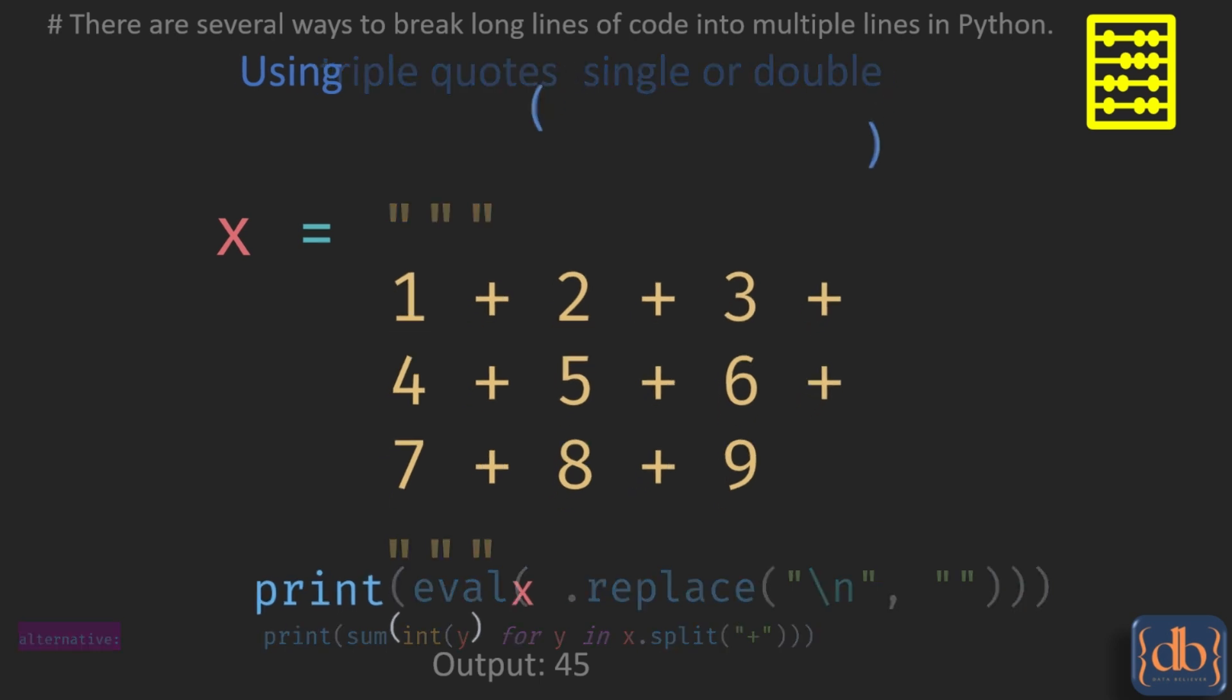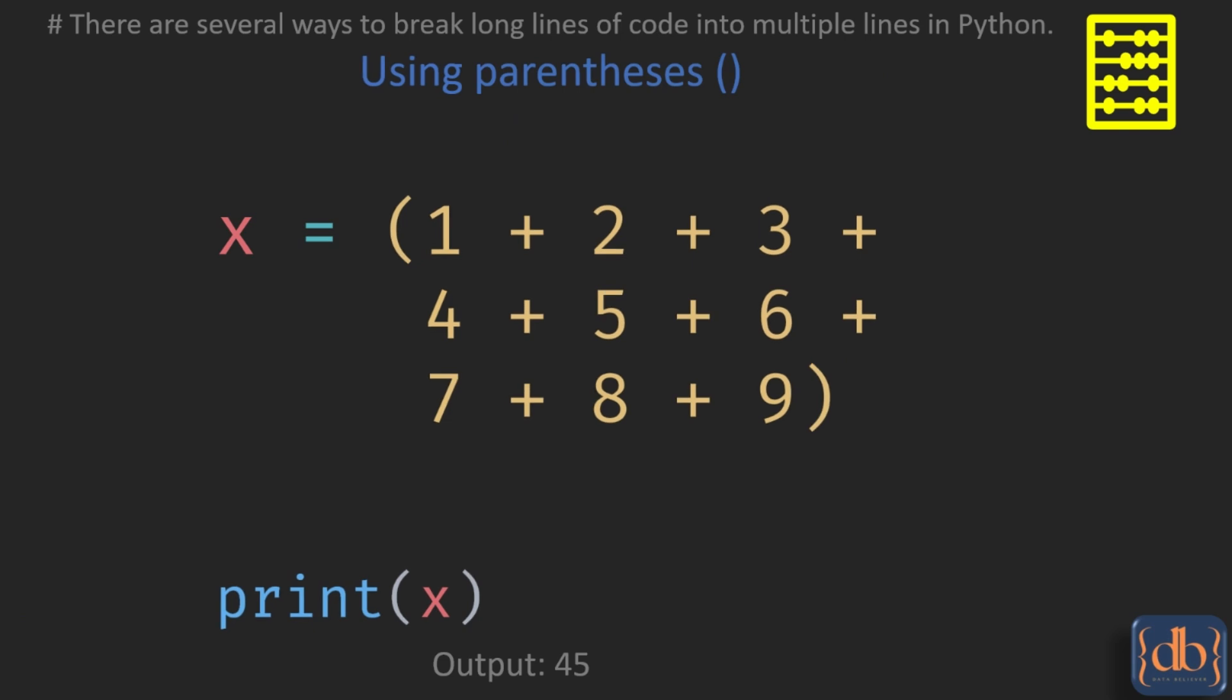We will start by looking at the backslash operator and triple quotes, which are the two recommended ways to break long lines of code in Python.